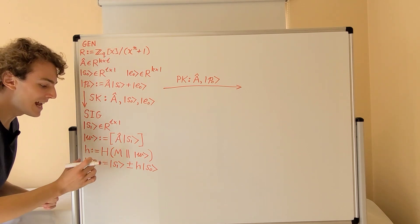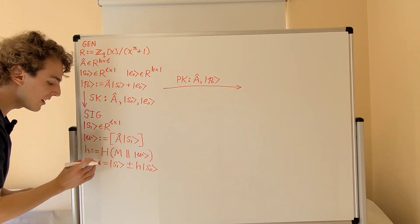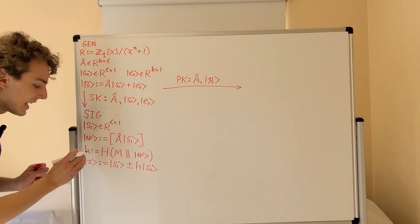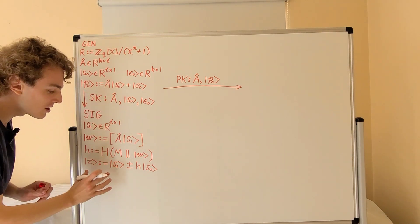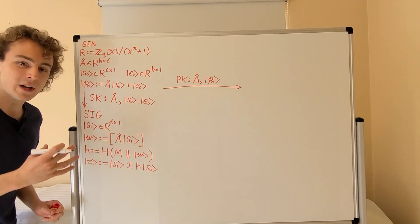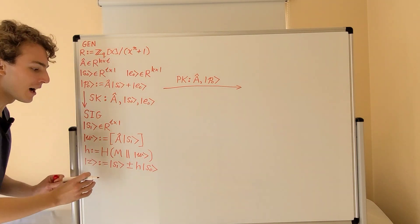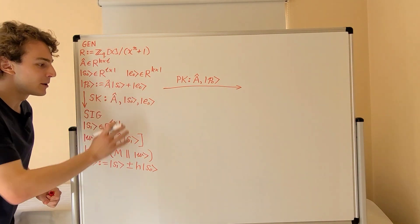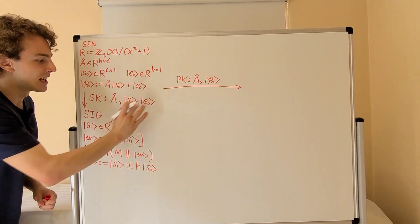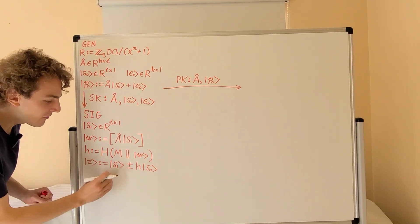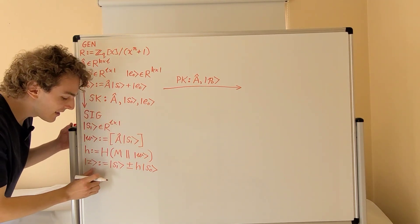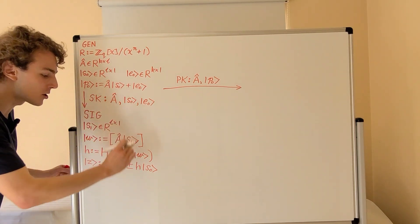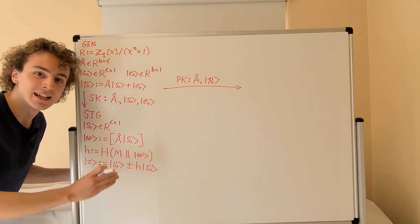Z is a potential signature, but we have to make sure it is a valid signature. If we just broadcast this value of Z publicly, there is a risk that we could reveal information about the secret key. So we must check whether Z reveals information about the secret key, because we cannot afford to risk exposing it. We might have to run this procedure multiple times — if Z is invalid, we restart. We can think of this as a loop: we run the signing procedure until we construct a valid signature for this message.